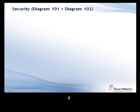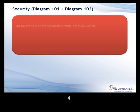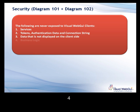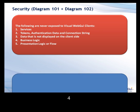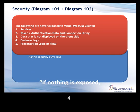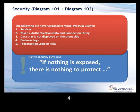To sum up the security: Visual Web GUI applications never expose any services, tokens, connection strings, or business logic on the client. The only data that's exposed to the client is the data the user is intended to view. It all boils down to a security-by-design architecture, which is easier to protect, because if nothing's exposed, there's nothing to protect.